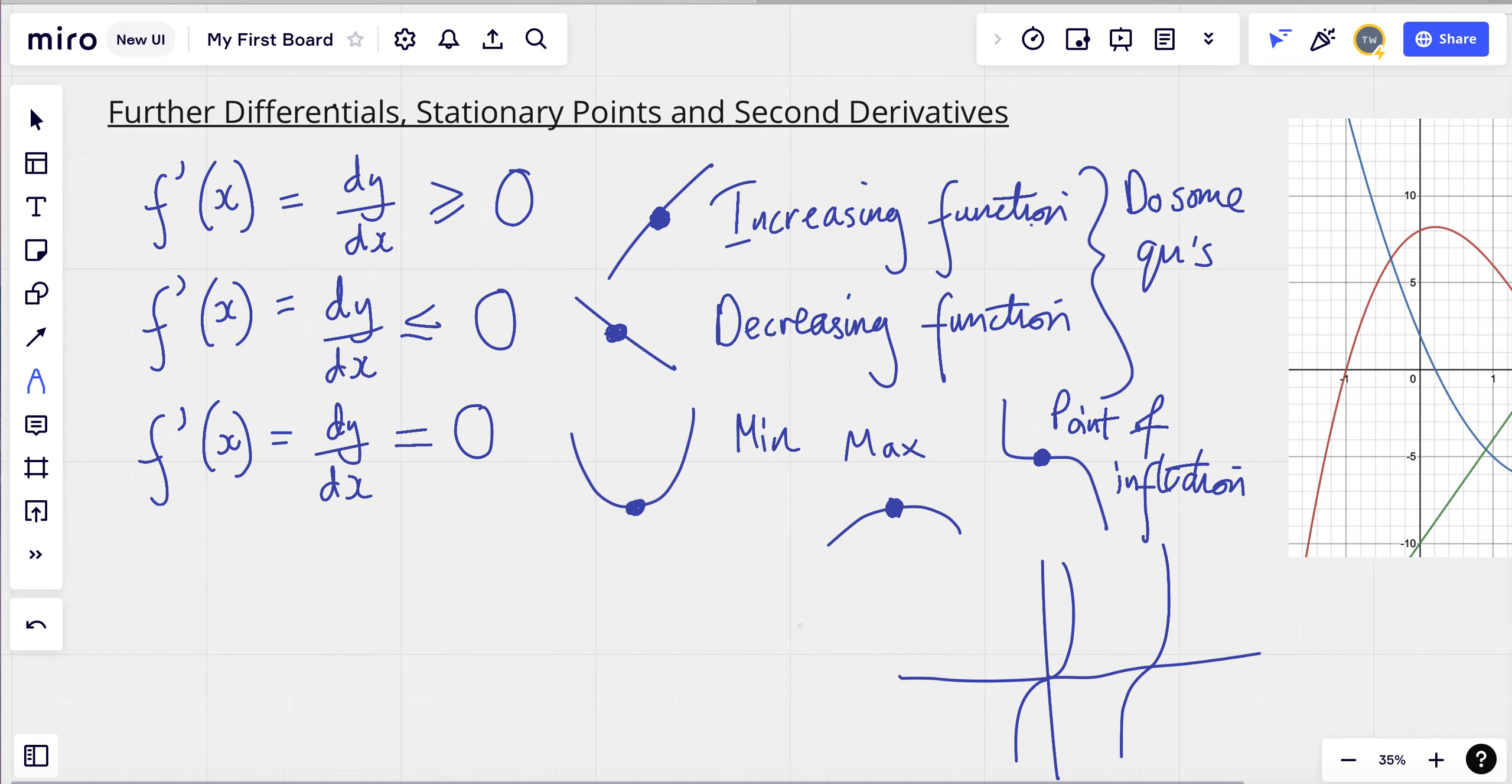Now, the thing about this, when we have equaling 0, we don't actually know whether it's going to be a minimum or a maximum, or a point of inflection. Whereas with these two, the first two, we knew what they were going to be. So for this, we need to have a bit more of a robust method as to how we're going to work out what's actually going on. So we need to, we can use two methods for this.